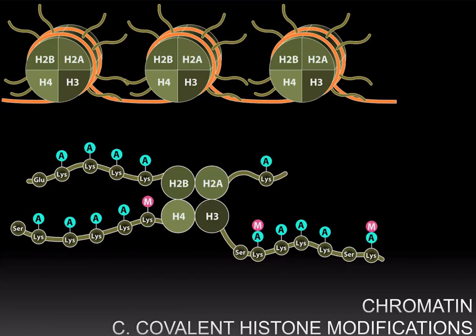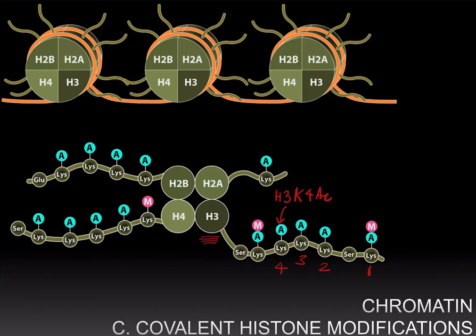You can add acetyl groups or methyl groups to these amino acids, thereby changing the polarity and charge distributions and affecting the interaction between histone proteins and DNA. There is a particular notation for histone modifications. For example, if you are looking at histone H3 and the 4th lysine — the IUPAC letter for lysine is K — then you would say H3K4 acetylation if you had an acetyl group attached to that lysine residue.